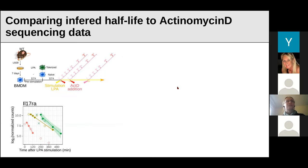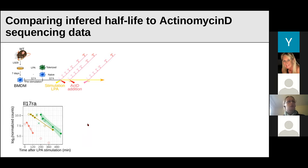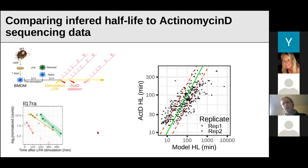When fitting a model, it's good to have external data to confirm parameter values are meaningful. We had actinomycin-D RNA sequencing data — actinomycin-D is a transcription inhibitor, so by doing a time course after its addition you can see only mRNA decay and infer half-life. Comparing those results to my simulation, they match relatively well. The model has a slightly higher dynamic range — slightly shorter and longer half-lives — but overall the correlation is quite strong, confirming the fitting procedure worked decently.